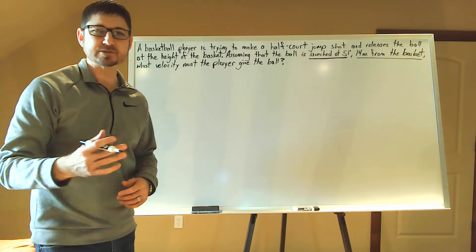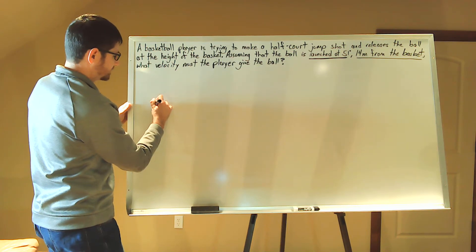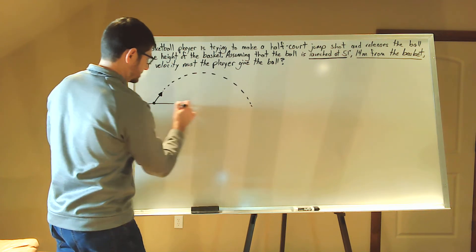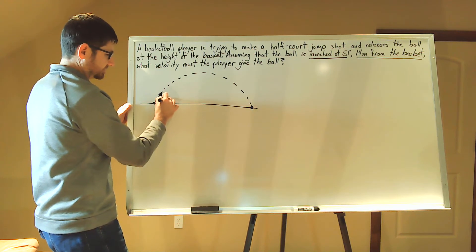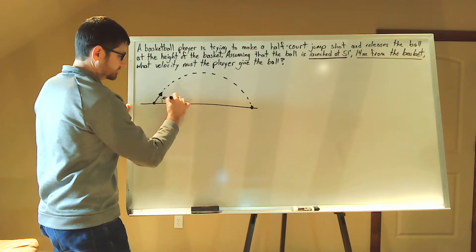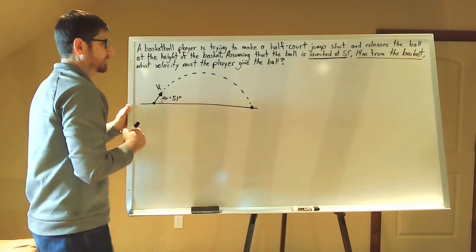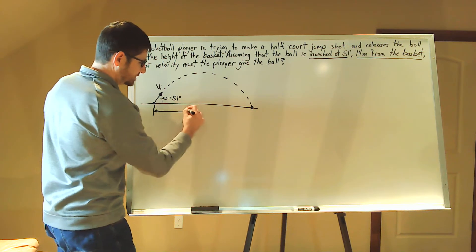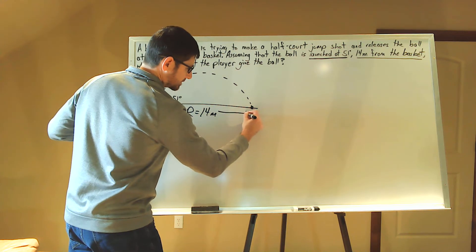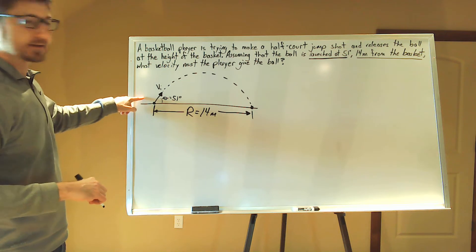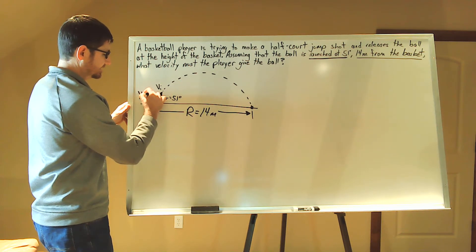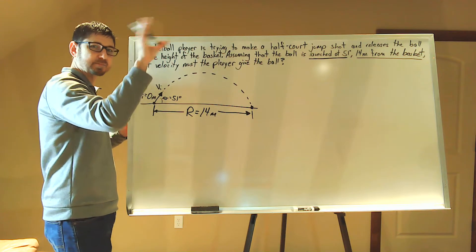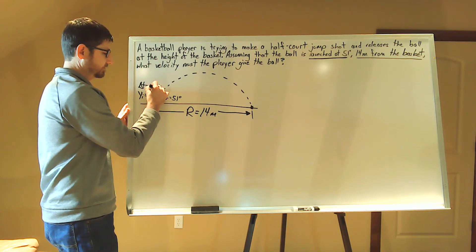The first thing we need to do is draw a picture. We know that the basketball player shoots the basketball at 51 degrees. Our angle with respect to the x-axis — angle theta — is 51 degrees. Let's label the initial velocity. We don't know what the initial velocity is; that's what we're required to calculate. But we do know that the range is equal to 14 meters. We also know that our initial height, y sub i, is equal to 0 meters, and the time just as the player releases the ball is 0 seconds.